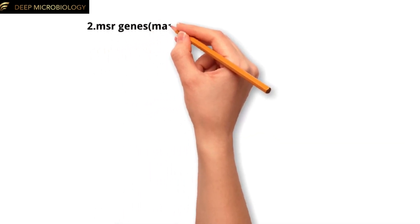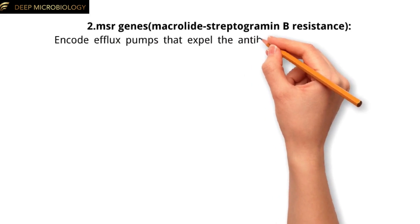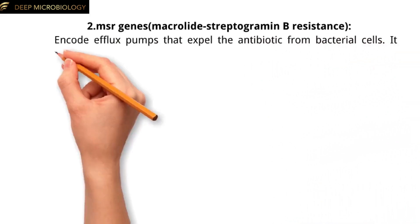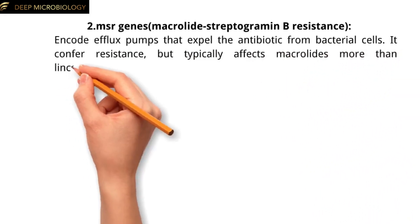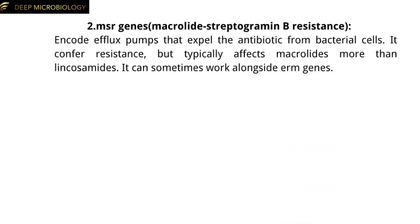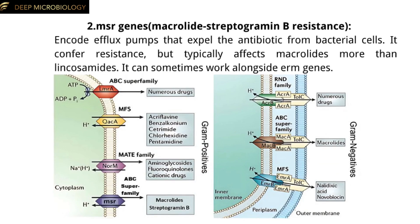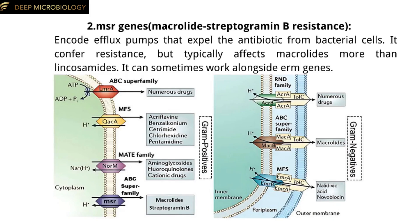The second type is MSR genes, macrolide streptogramin B resistance, which encode efflux pumps that expel the antibiotic from bacterial cells. They confer resistance but typically affect macrolides more than lincosamides, and can sometimes work alongside ERM genes. Efflux pumps are mechanisms used by bacteria to expel toxic substances, including antibiotics, from their cells, which is a key factor in antimicrobial resistance.